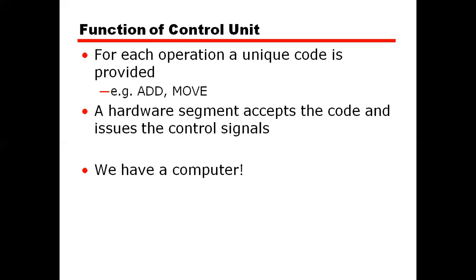The control unit's function is that for each operation, a unique code is provided. For example, if you want to add two values, you give the operation a unique code: ADD. ADD is an operation, and to perform the add operation, we make a unique code. And if you want to send data from one component to another component, we use the unique instruction MOVE — this is a command that moves data from one component to another.